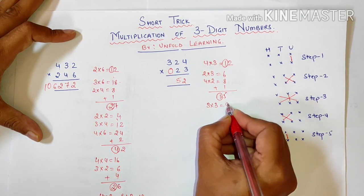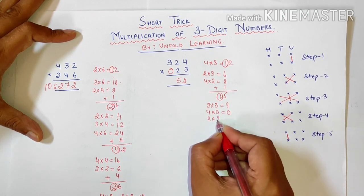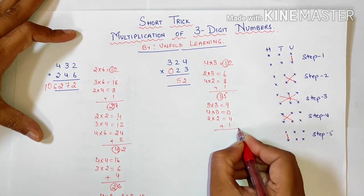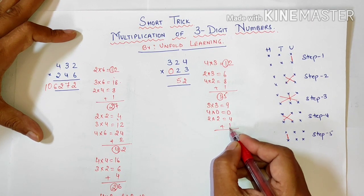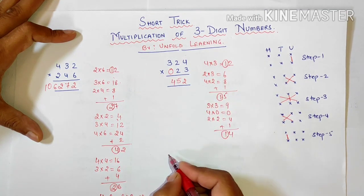3 times 3 is 9. 4 times 0 is 0. 2 times 2 is 4. Plus 1 carry over. 4 plus 9 is 13. Plus 1 is 14. 4 and 1 carry over.